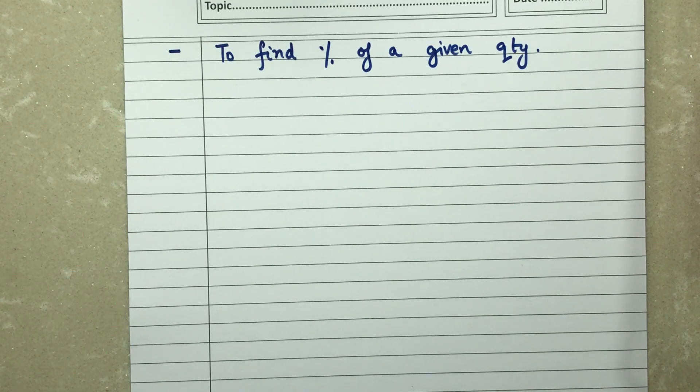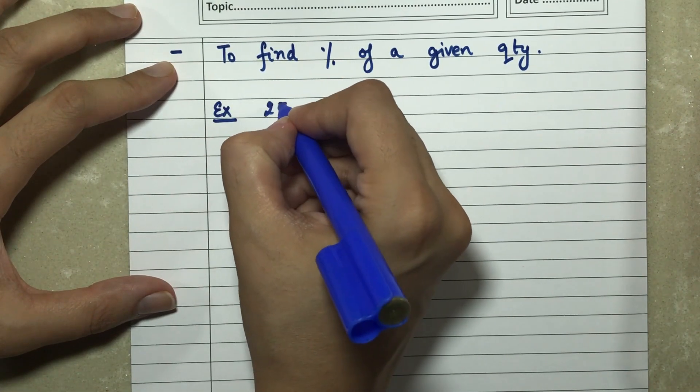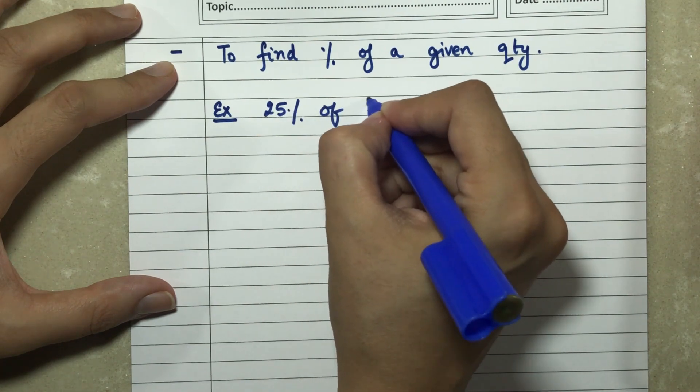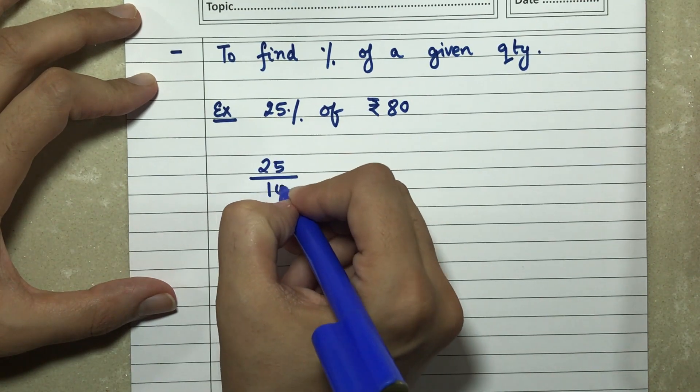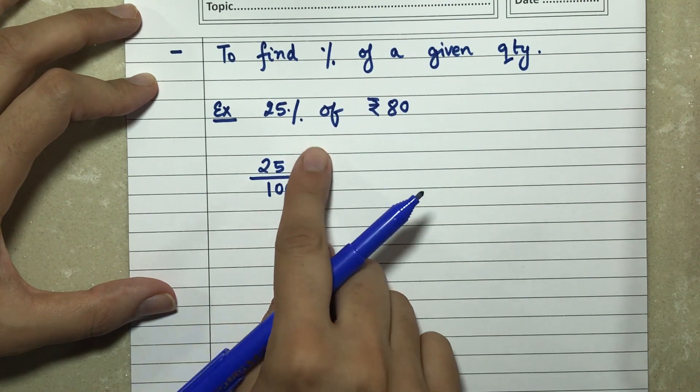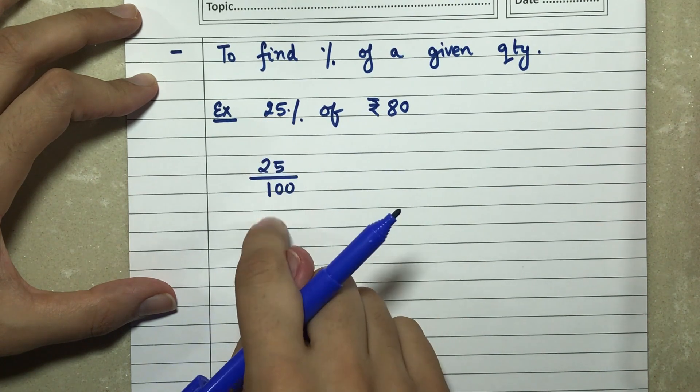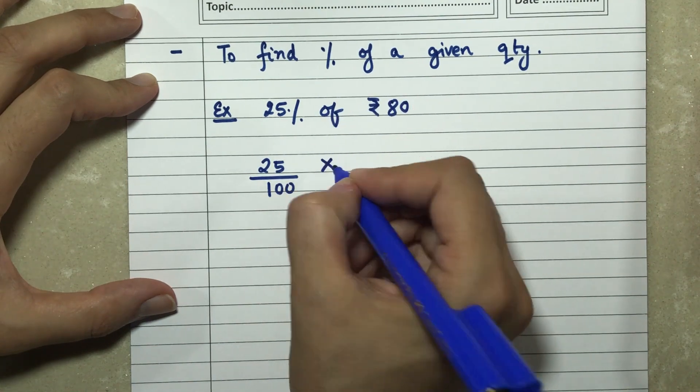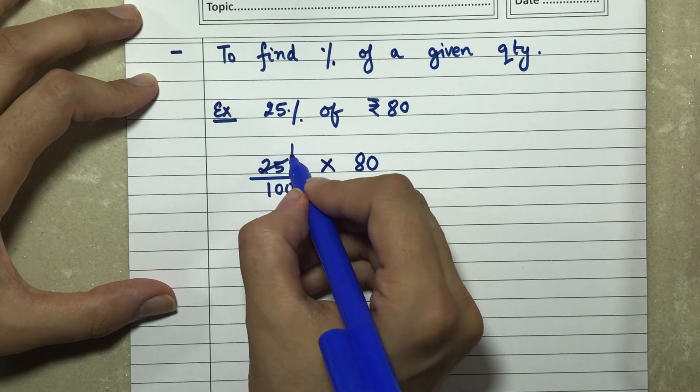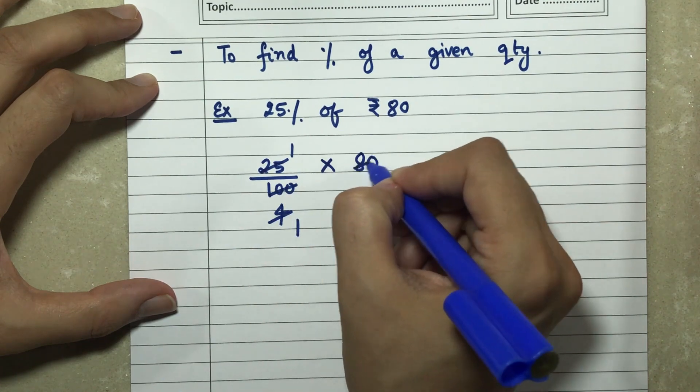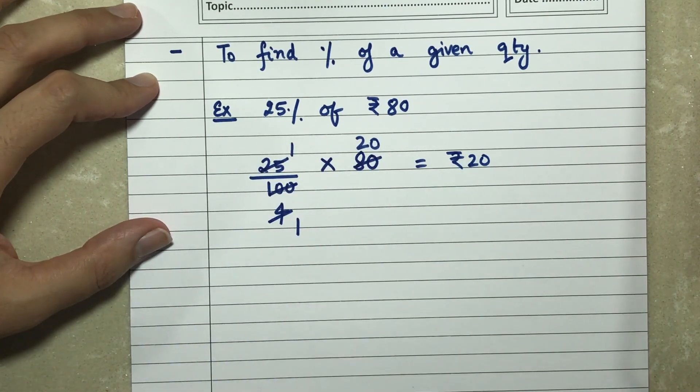Third type is when I have to find percentage from a given quantity. For example, if I want to find 25% of 80 rupees, what am I going to do? Simply the first step is that I write 25 by 100. I remove the percentage sign and write it in fraction form. So I write 25 by 100, off means I'm multiplying, so replace off with a multiply sign. This becomes 80. Now simply 25 ones are 25, fours are 4, ones are 4 to 0. So rupees 20 is 25% of 80 rupees.